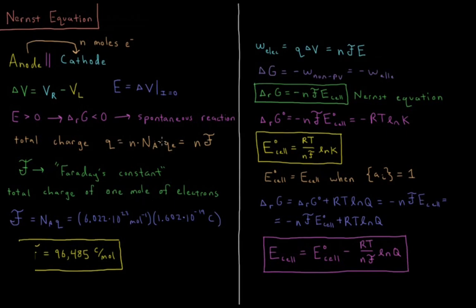Faraday's constant is defined to be the total charge of one mole of electrons. By the structure of this equation, Faraday's constant equals Avogadro's number — 6.022 × 10²³ per mole — times the charge of an individual electron, which is 1.602 × 10⁻¹⁹ coulombs. So Faraday's constant is 96,485 coulombs per mole of electrons.